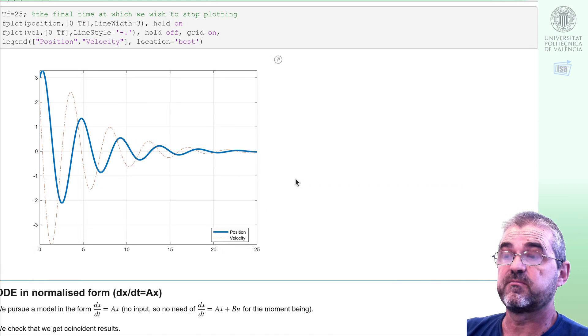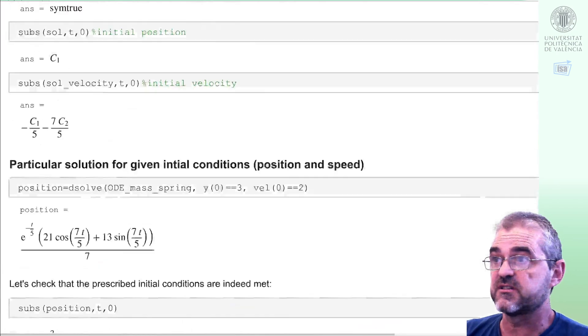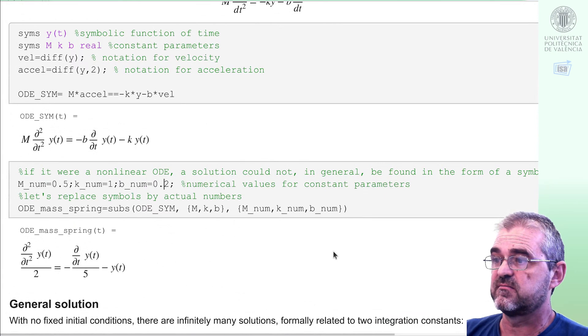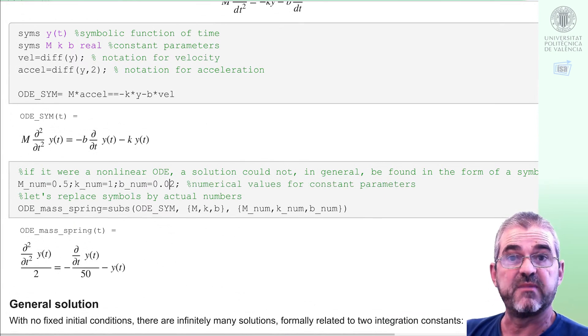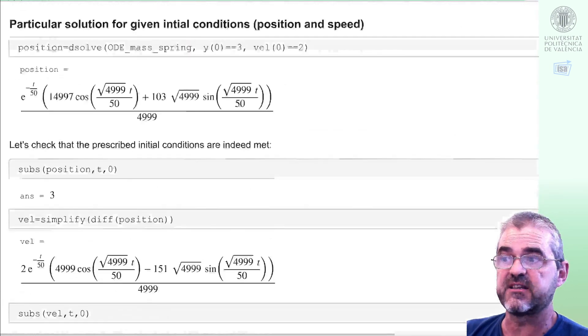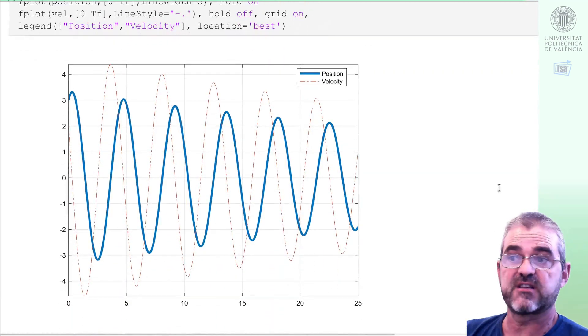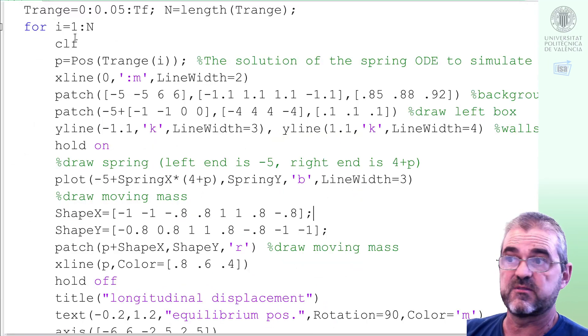As a last simulation, we may think in changing the friction coefficients, for instance. If we set 10 times less friction, the system will be less damped and oscillations will take longer to vanish. Indeed, in these 25 seconds, oscillations vanish very little. So if we now run the simulation code, we see how oscillations take longer.